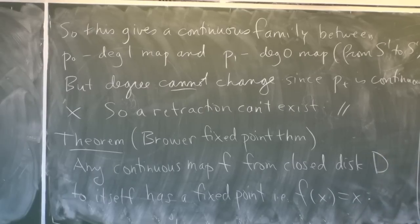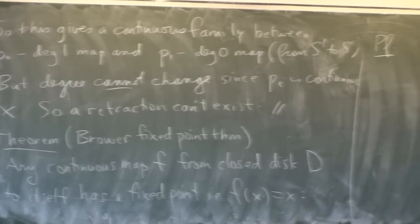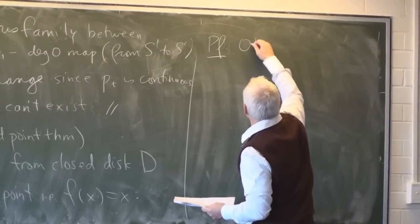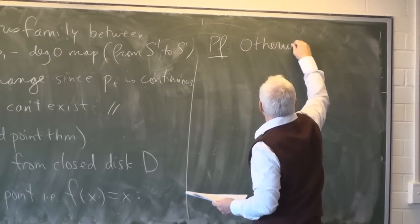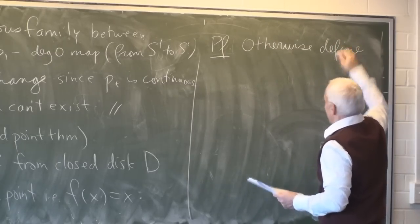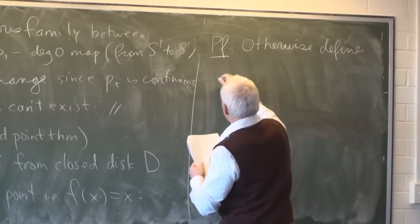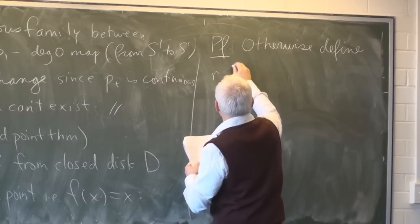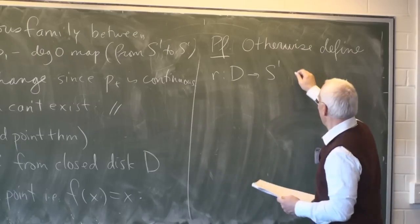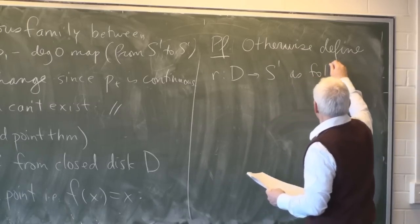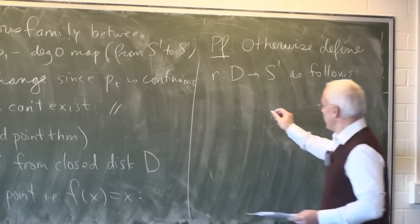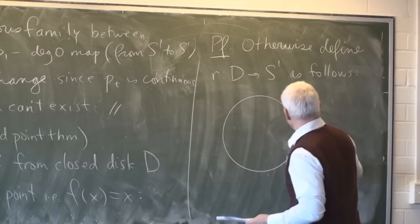What that means — there exists some point x such that f of x equals x, some point that is not moved by the transformation. Proof: it's only a one-line proof. Suppose there's our disk with boundary being the circle.